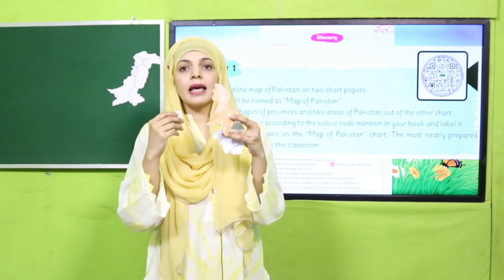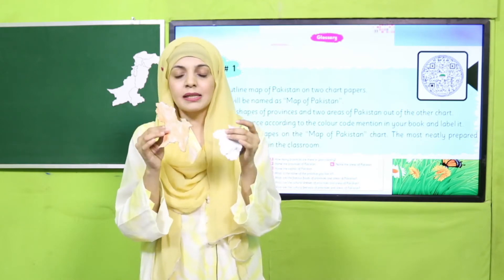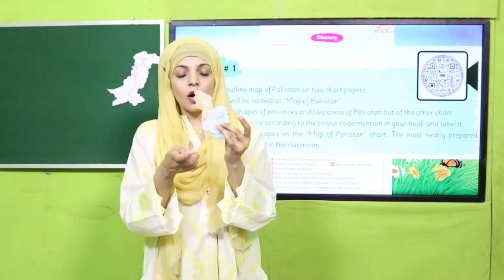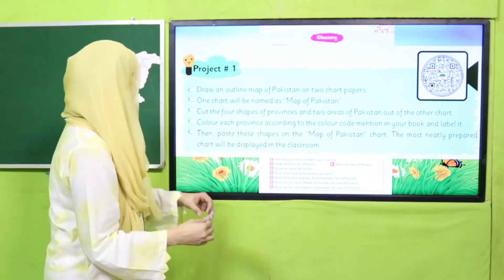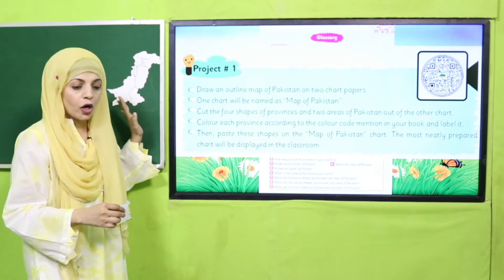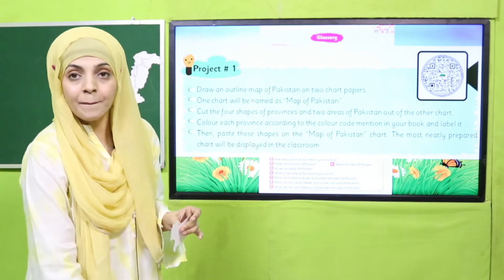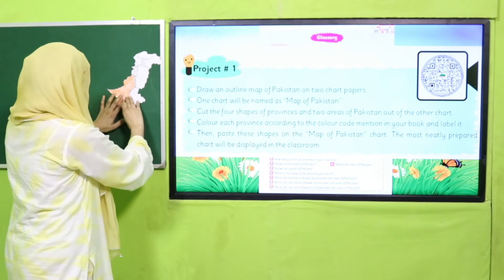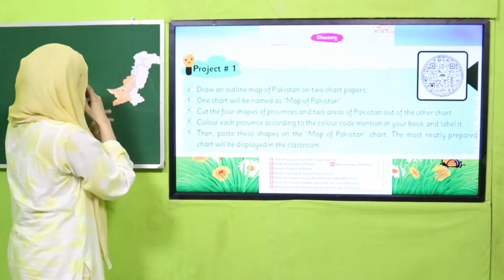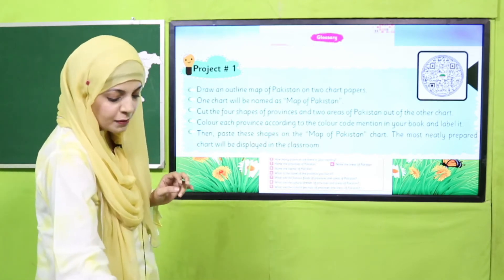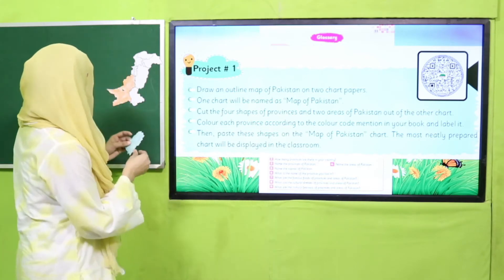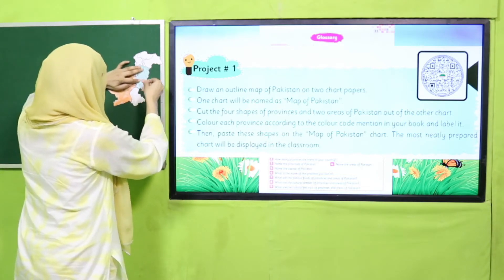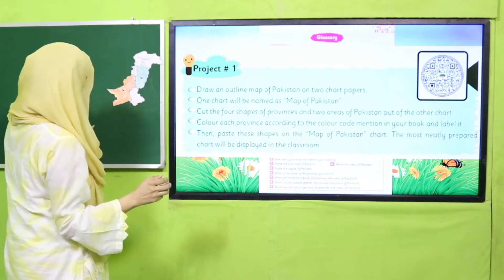You need two outline maps of Pakistan, then cut out the province shapes with the help of an adult or teacher. Color them according to the color codes, then paste them one by one on the map of Pakistan accordingly. First of all paste Balochistan — everybody, all the groups will paste Balochistan on the map of Pakistan. Here comes the Balochistan. Then let's paste Punjab — this is Punjab and the color code is green, so I have pasted this.